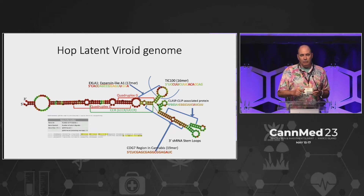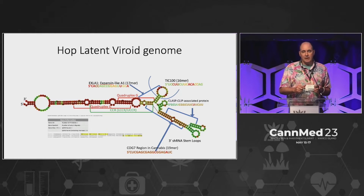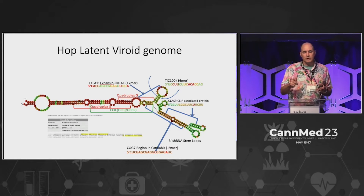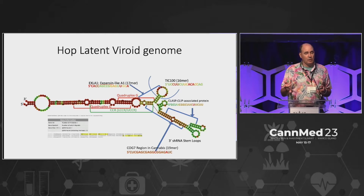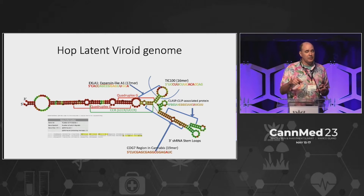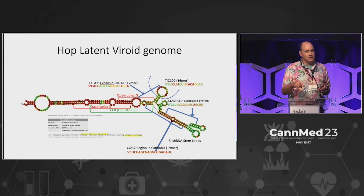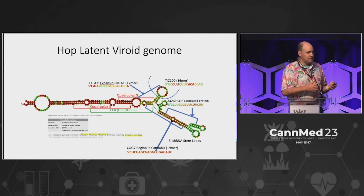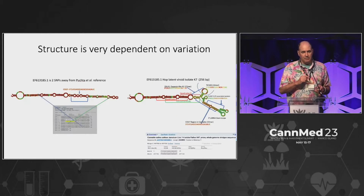What you'll notice is we've decorated certain portions of this viroid with the sequence regions where they have homology to certain genes in the cannabis genome. And that's going to become important as we step forward.